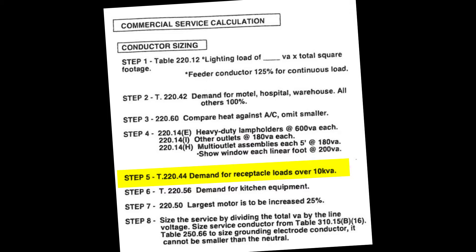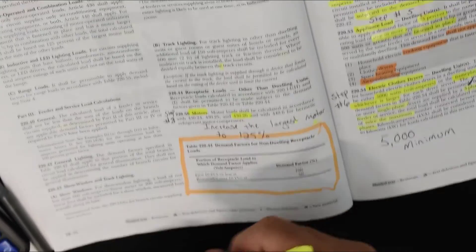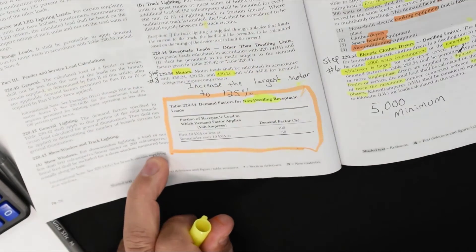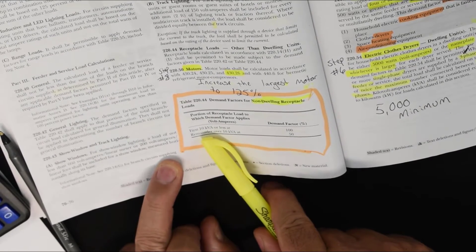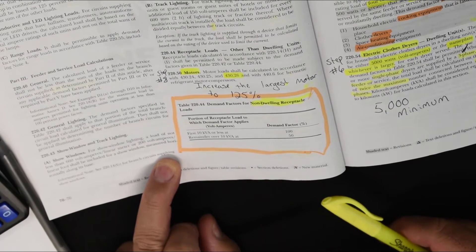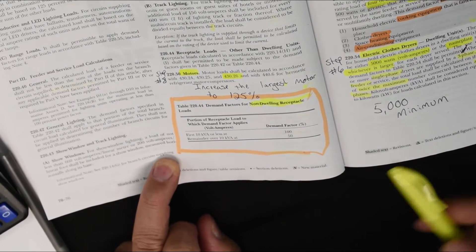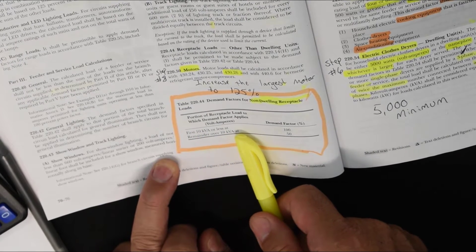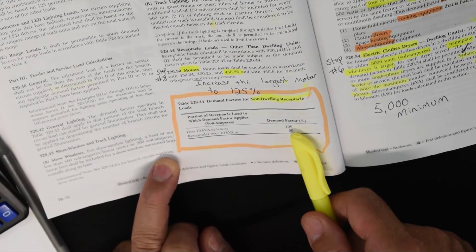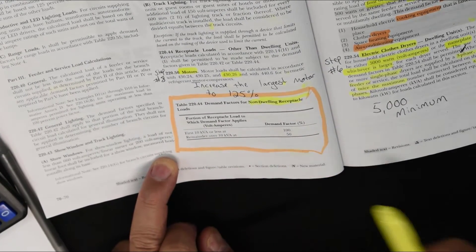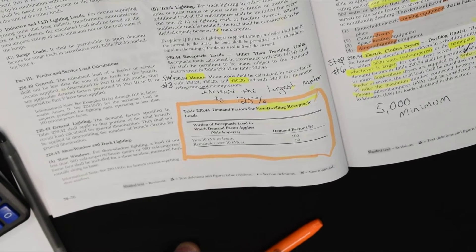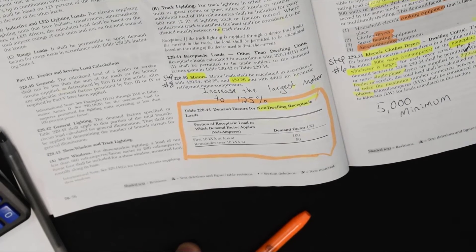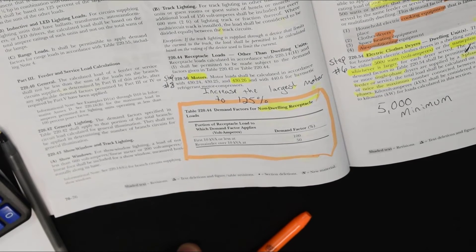Step 5 takes us to Table 220.44, demand for receptacle loads over 10 KVA, which is specific to non-dwelling occupancies. After adding up all your receptacle loads at 180 VA each, or 1 VA times square footage, the first 10,000 VA or less is at 100%, and anything over 10,000 VA is at 50%. This reduction reflects the reality that a receptacle has no load by itself — only whatever is plugged in — so not every receptacle will be used at full capacity all day long.